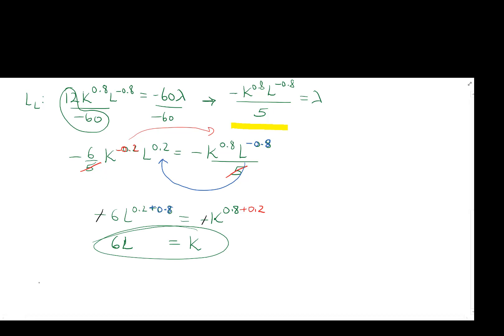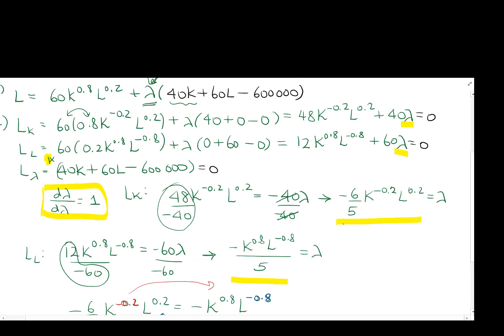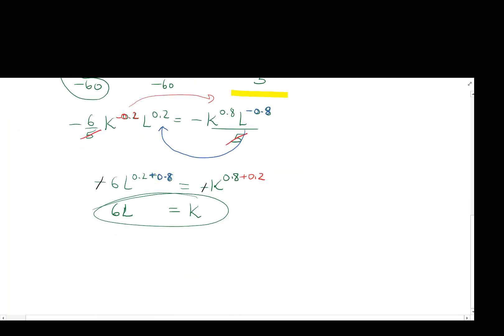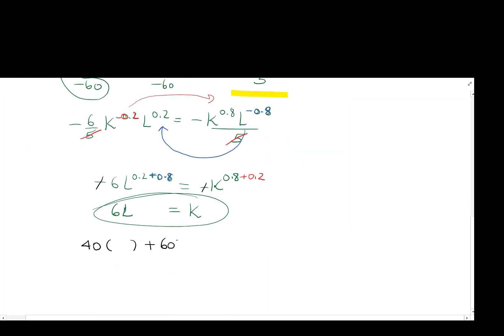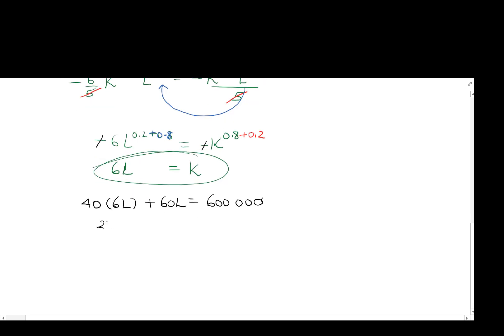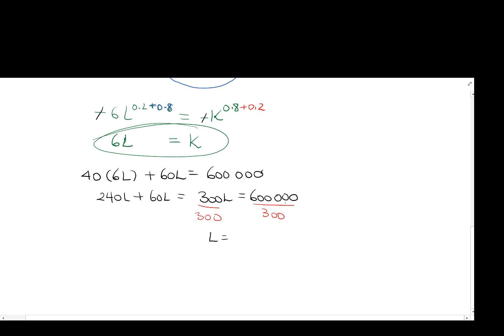And now, next step is to go and put that expression into our constraint, this guy right here. So 40K plus 60L is equal to 600,000, and we now know that K is 6L. So we end up with 40 times 6 is 240L plus 60L, which gives 300L equals to 600,000. And that gives 600,000 over 300, which gives 2,000 for L. And since we know that K is 6 times L, it's 6 times by 2,000, which gives 12,000.